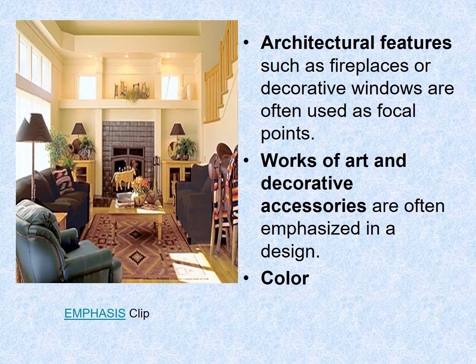Architectural features oftentimes will serve as emphasis in a space. An example of that would be this fireplace here in the room and then everything around it has been worked to balance around that fireplace. We see an example of symmetrical balance here where you have a sofa and a sofa, but then we have a chair to the side and then we have the saddle that takes the place of this chair to create pieces of emphasis.